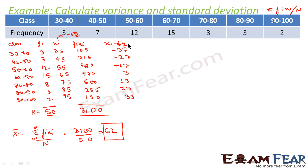Next, we find the square of xi minus mean. 27 squared is 729. 17 squared is 289. 7 squared is 49. 3 squared is 9. 13 squared is 169. 23 squared is 529. 33 squared is 1089.